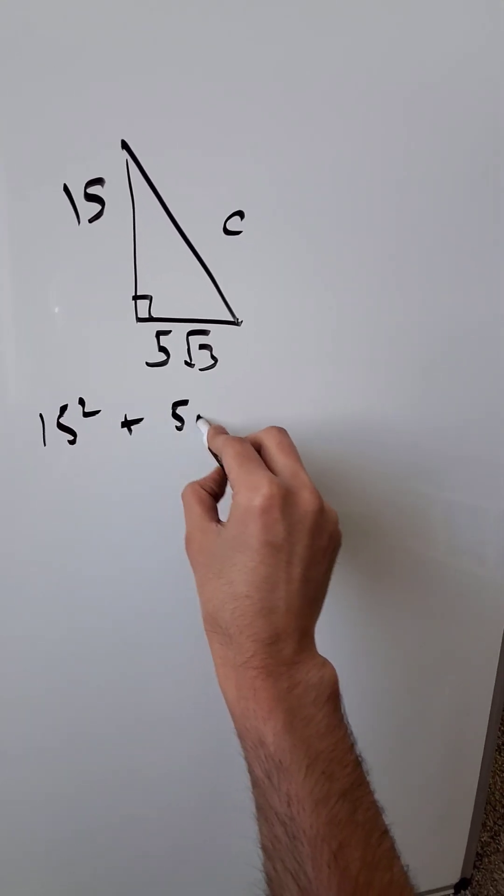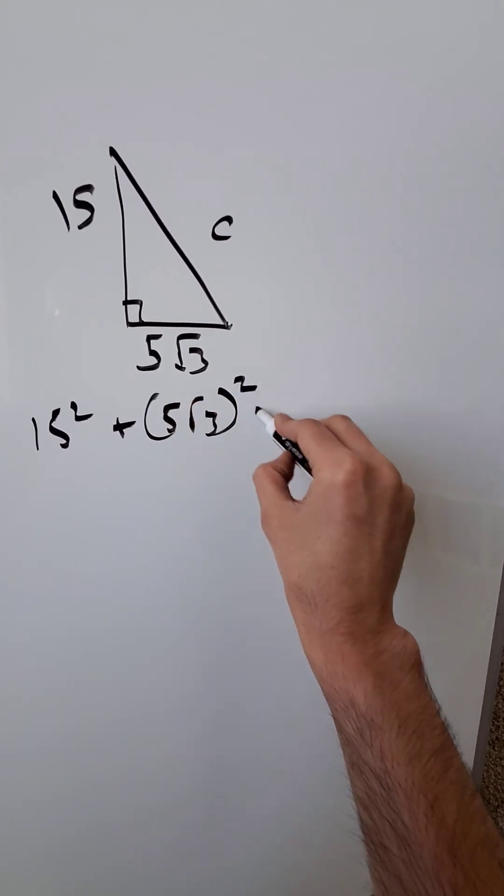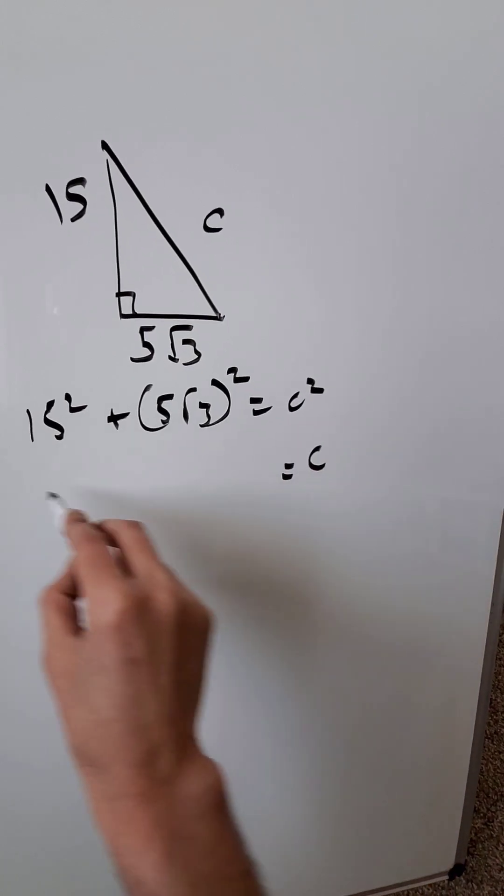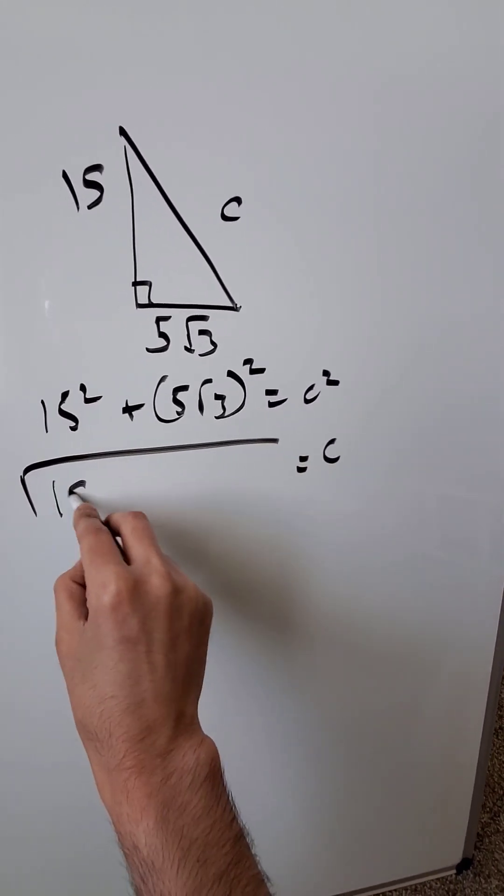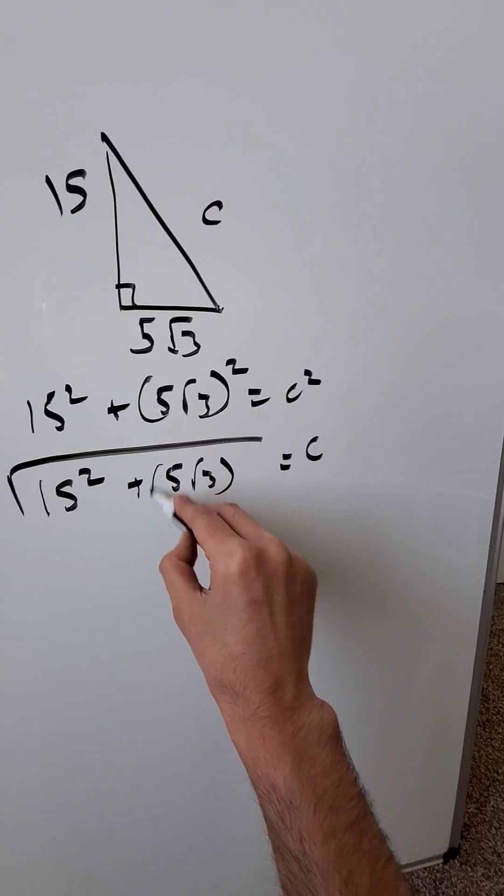You know 15 squared plus 5 root 3 whole squared is equal to c squared. c will be equal to the square root of all of this. 15 squared plus 5 root 3 whole squared.